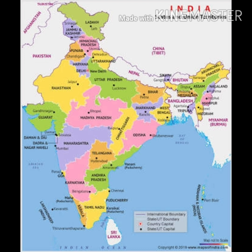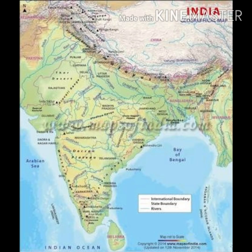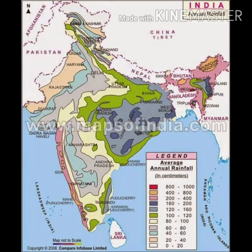Now we come to the physical map. These maps show the physical features of a region of the earth, like mountains, rivers, plateaus, coastal areas, and water bodies. They are also drawn on small scale maps and give a variety of information about particular physical features.